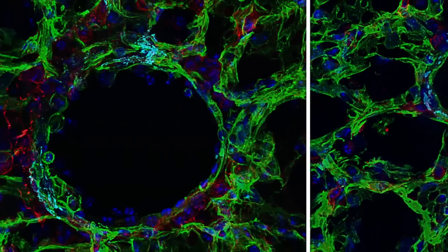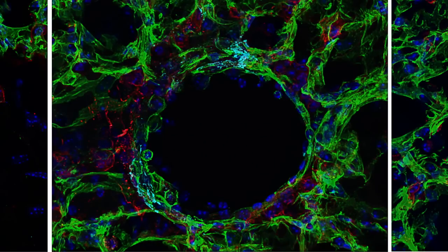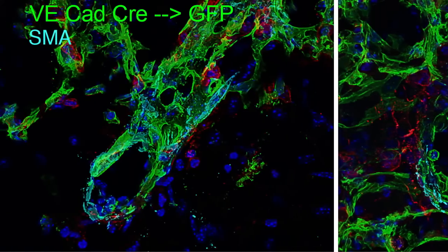The blue stain is a DAPI nuclear stain, and we also have a teal color — the teal is an immunostain that detects smooth muscle actin.